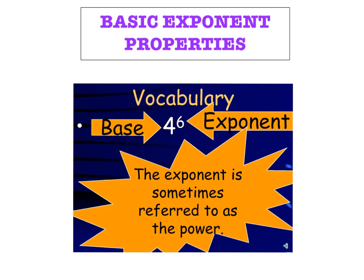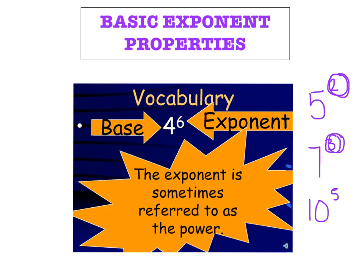If I have a base of 5 raised to the 2nd power, we'll call this 'squared' — so we'll just say 5 squared. Or maybe 7 raised to the 3rd power; I'll probably say 'cubed.' After that we'll stick to pronouncing them the usual way: 10 raised to the 5th power, or 8 raised to the negative 4th power.